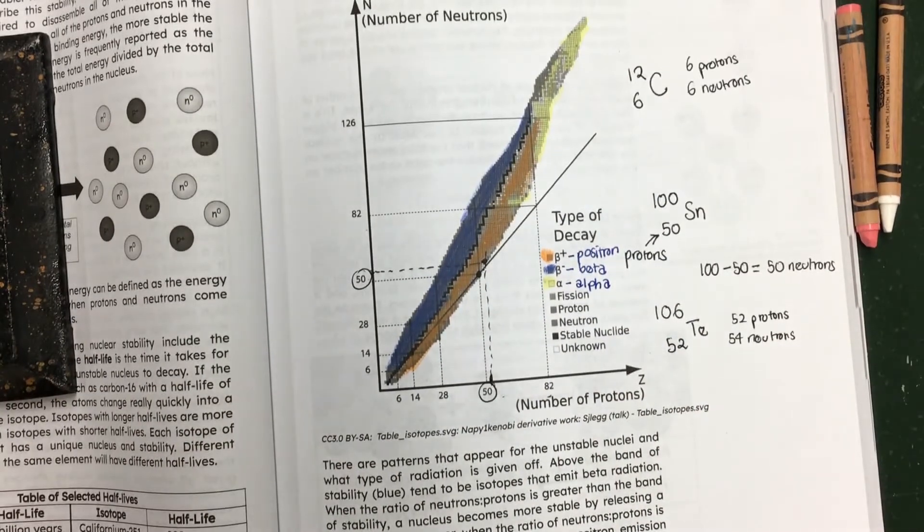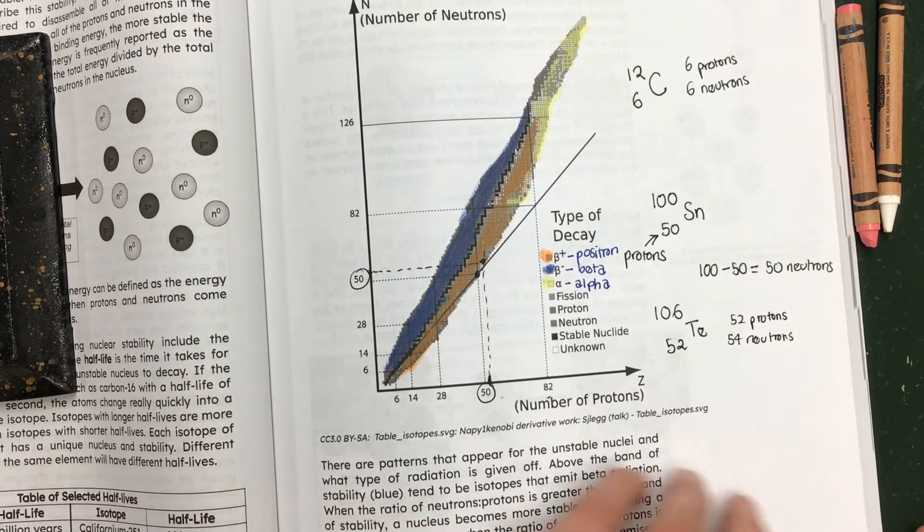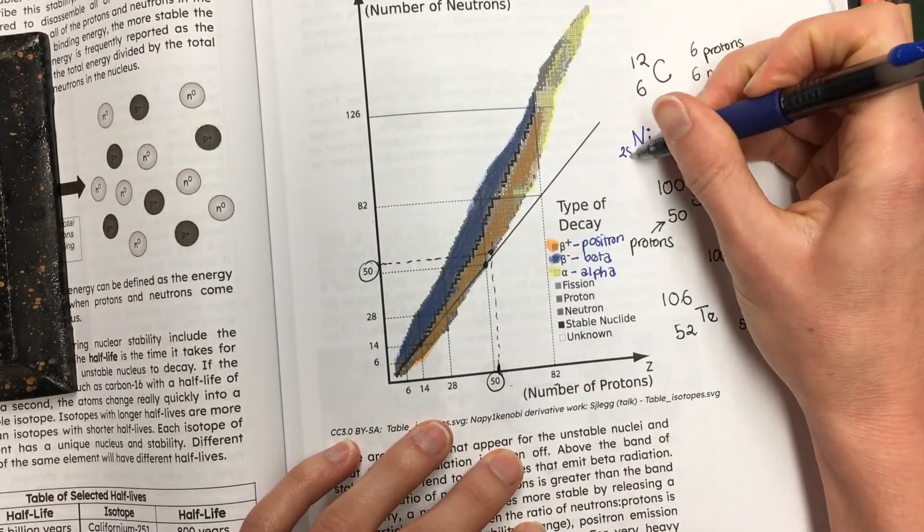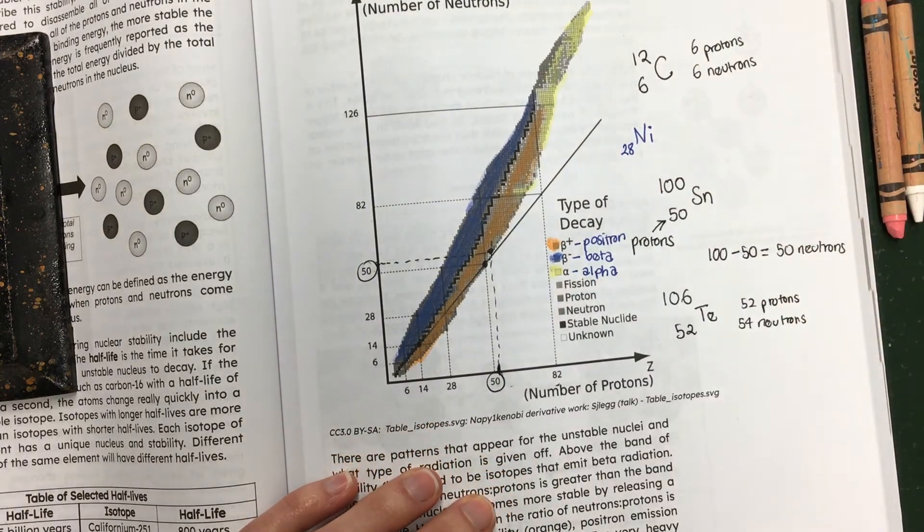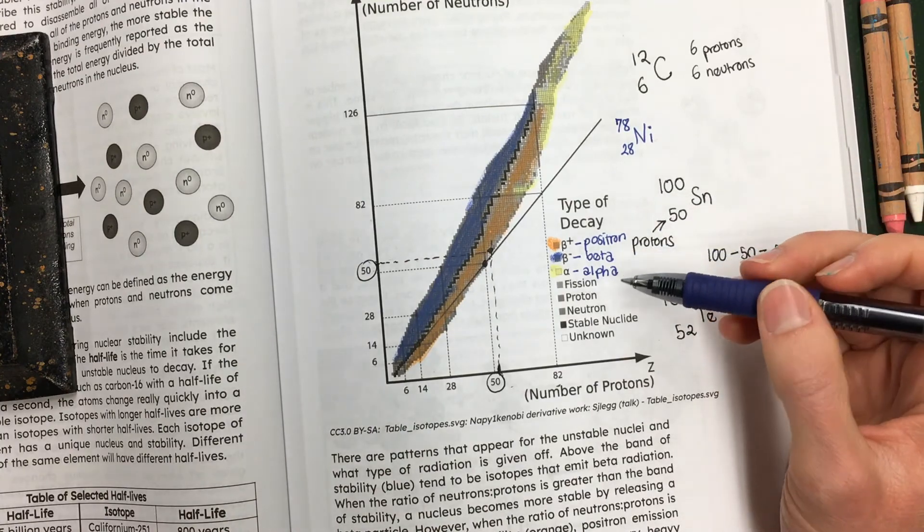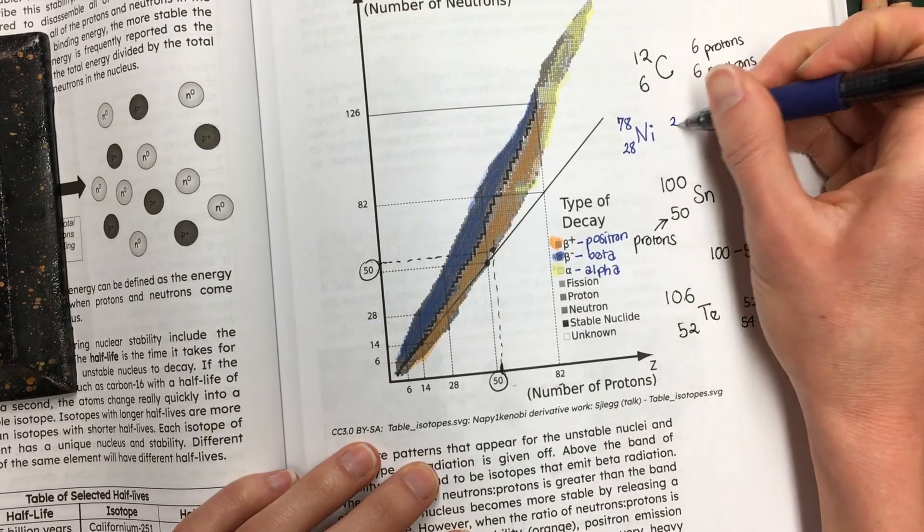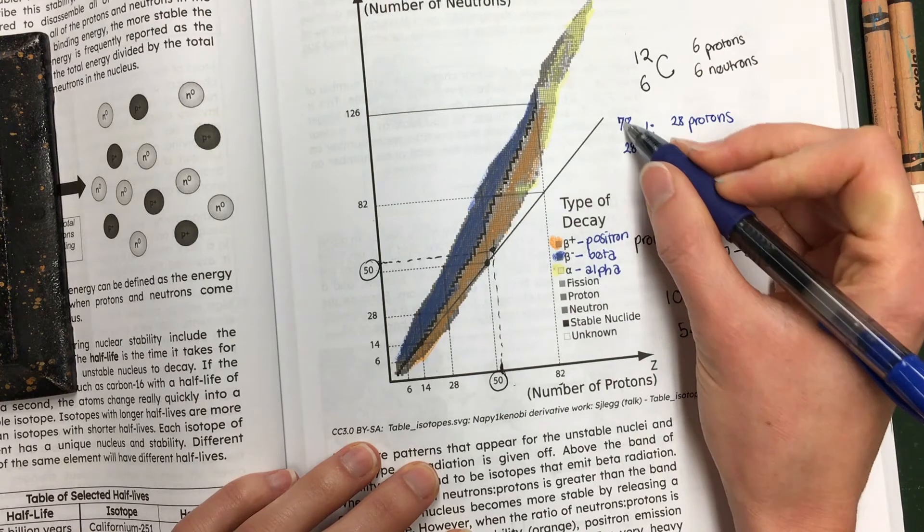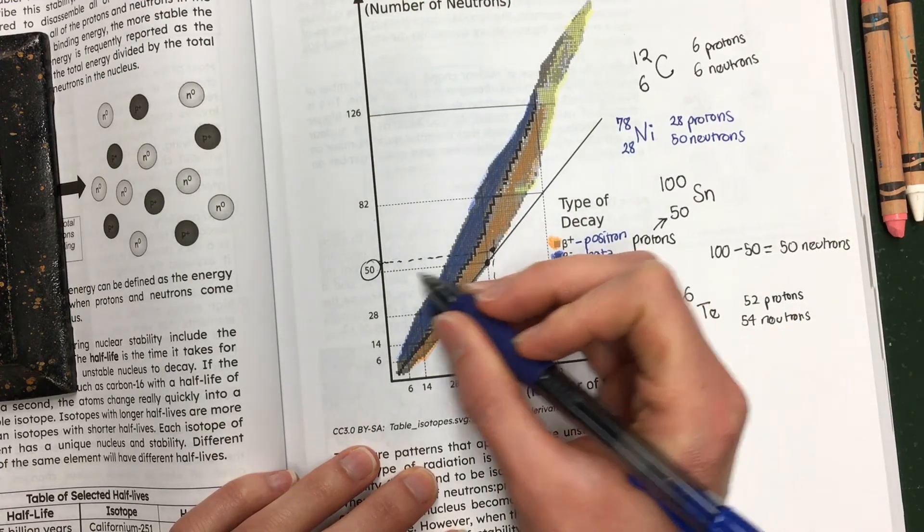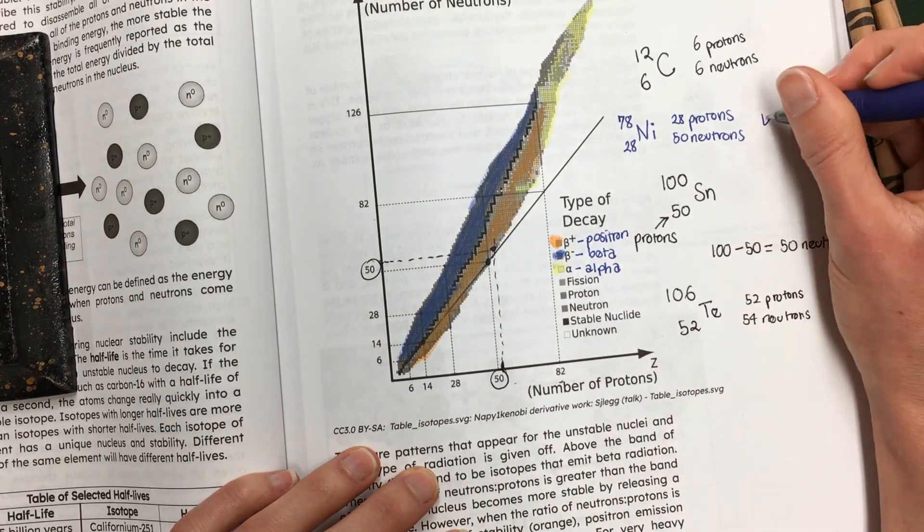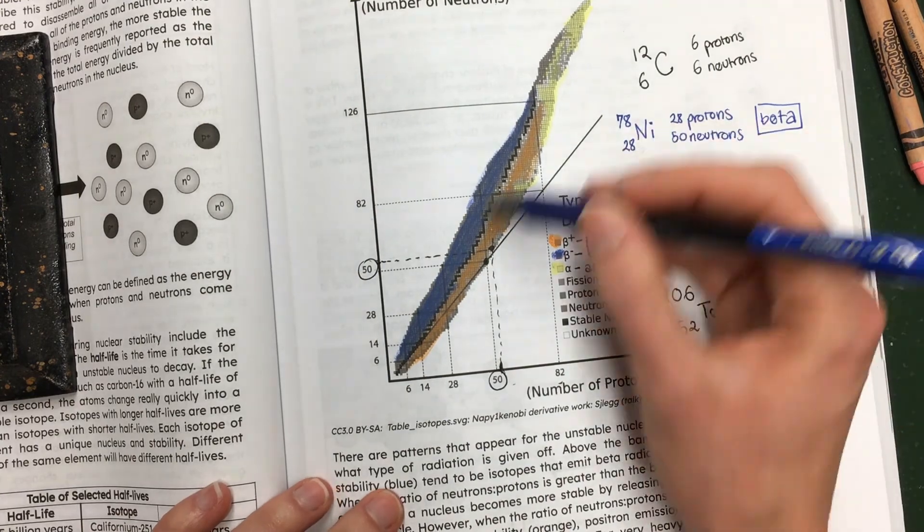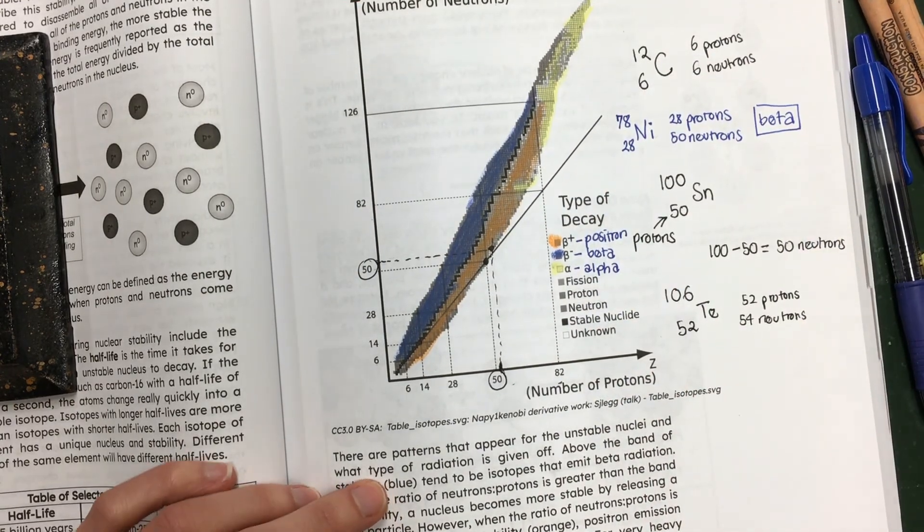What you need to be able to do is, let's say I give you an isotope. For example, let me think of an example here. Let's say I give you nickel-78. We need to figure out what type of decay nickel-78 would do. Well, nickel's got 28 protons, and then 78 minus 28 is going to be 50 neutrons. So if I find 28 protons, here's 28 protons, 50 neutrons is right here. That's in the blue. Blue is beta decay. So nickel-78 would do beta decay. And that's how you can read this chart. So I would recommend coloring it so you can see the different parts.